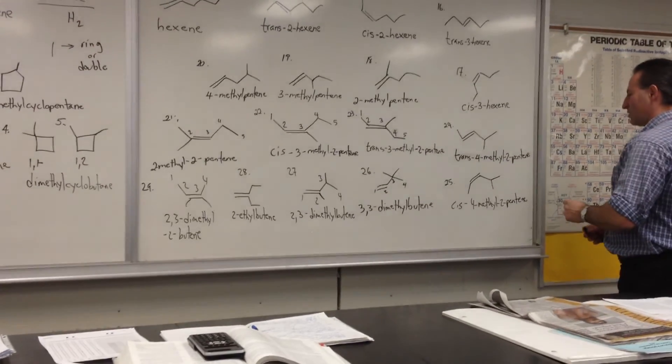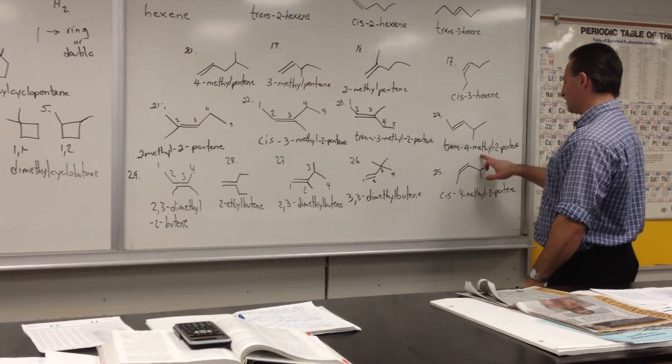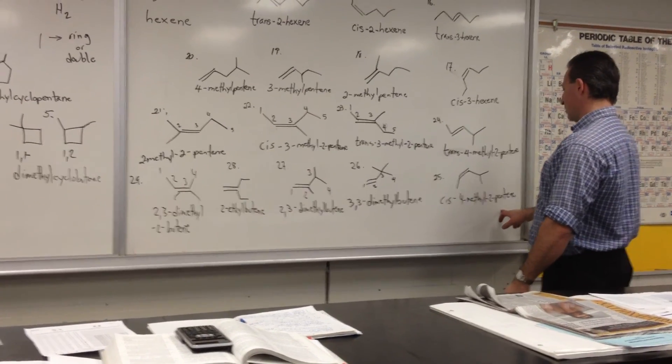The 24th possibility, we have moved the methyl group to the fourth position. So we call it trans-4-methyl-2-pentene. And it's also the cis isomer of the same molecule, cis-4-methyl-2-pentene.